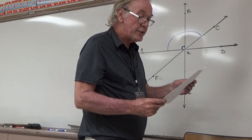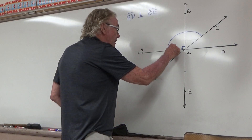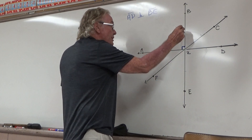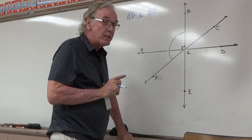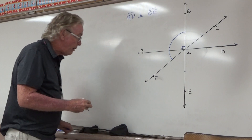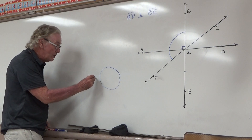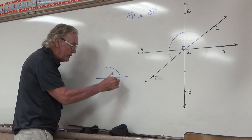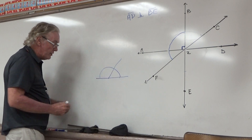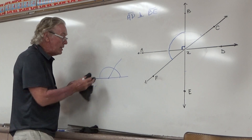The third question: name two angles that are supplements of angle BZF. Let me note angle BZF first — here's angle BZF. To be supplementary means two angles that sum to 180 degrees. Thinking back to the Babylonians, a full revolution is 360 degrees, and a half revolution is 180 degrees. Two angles that make that straight line together sum to 180 degrees and are therefore supplementary.